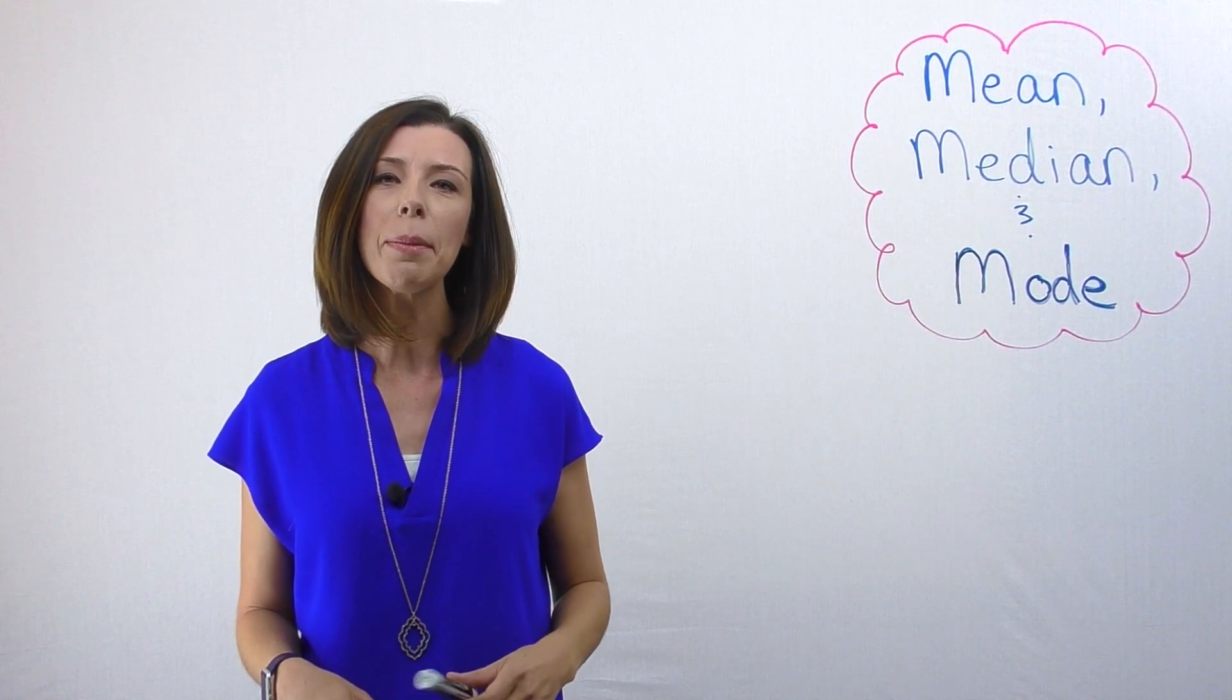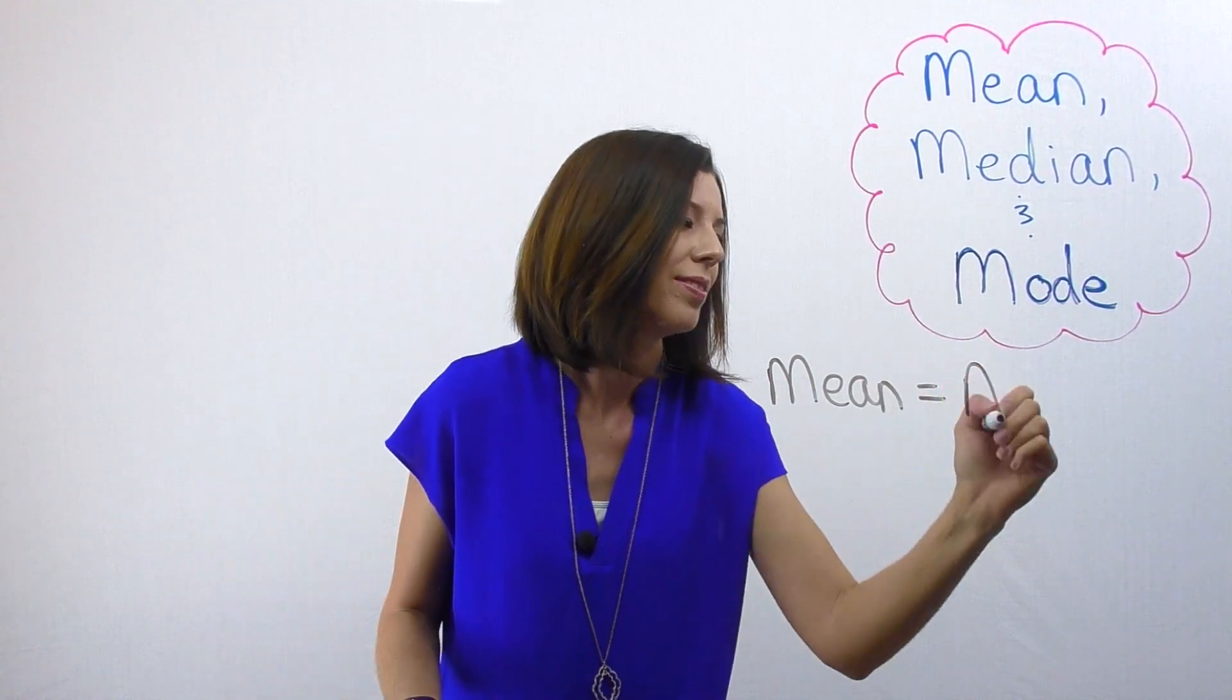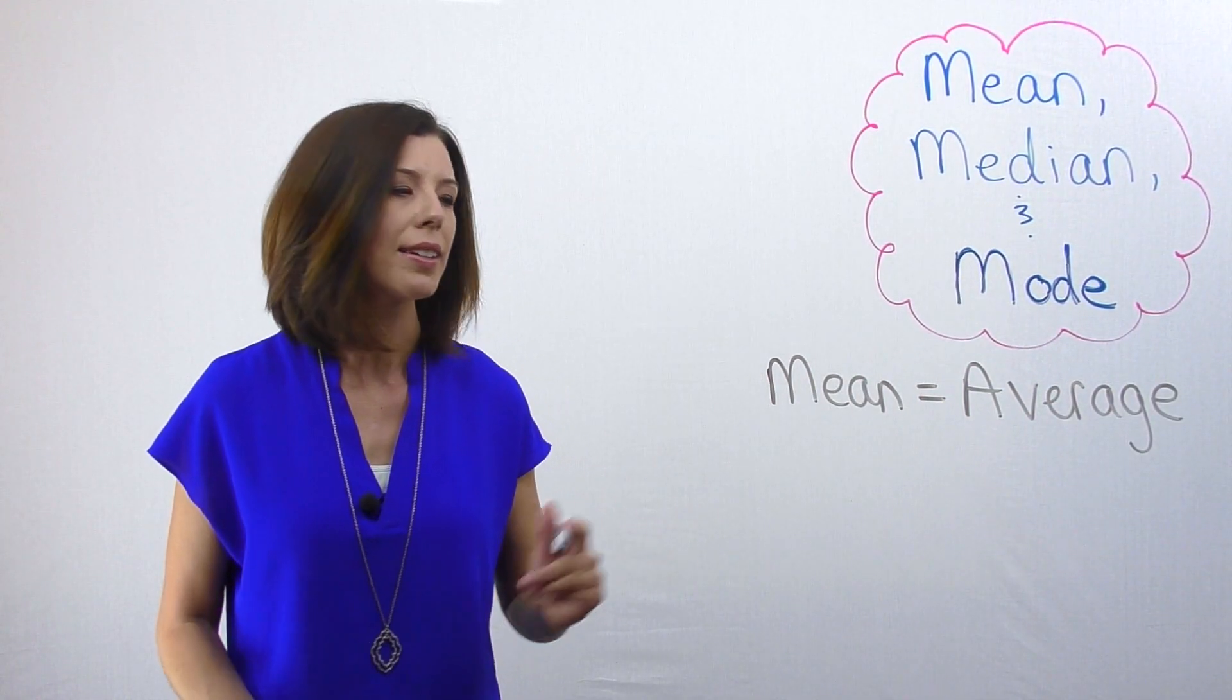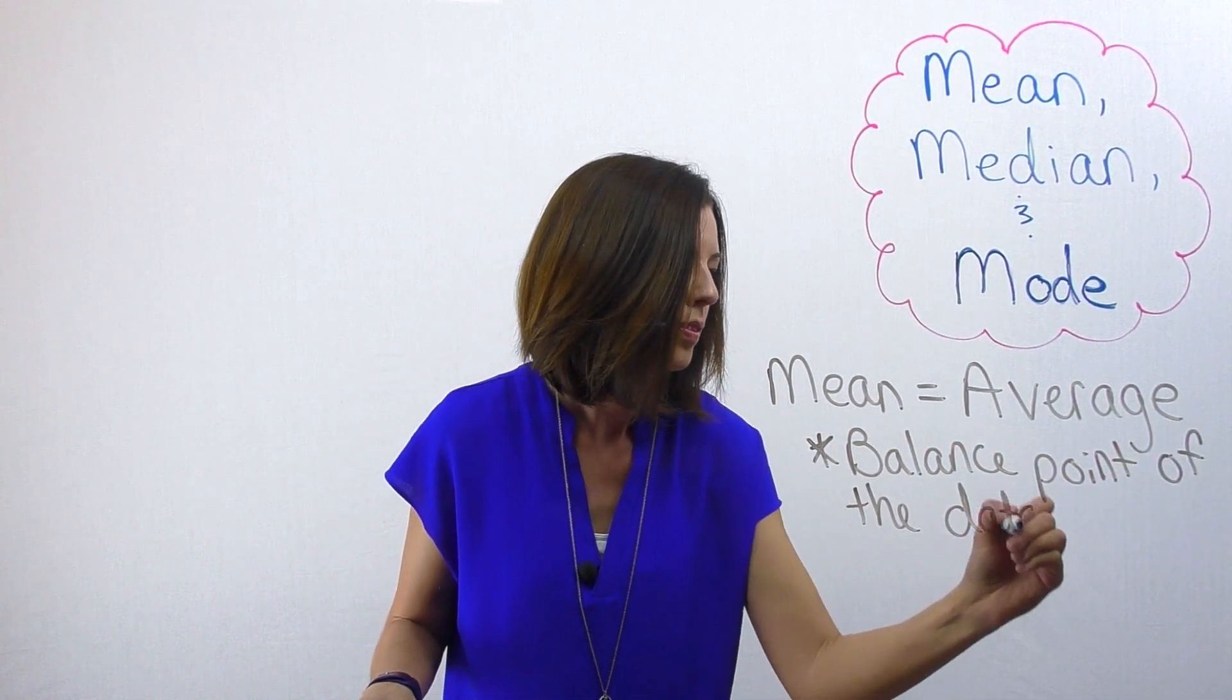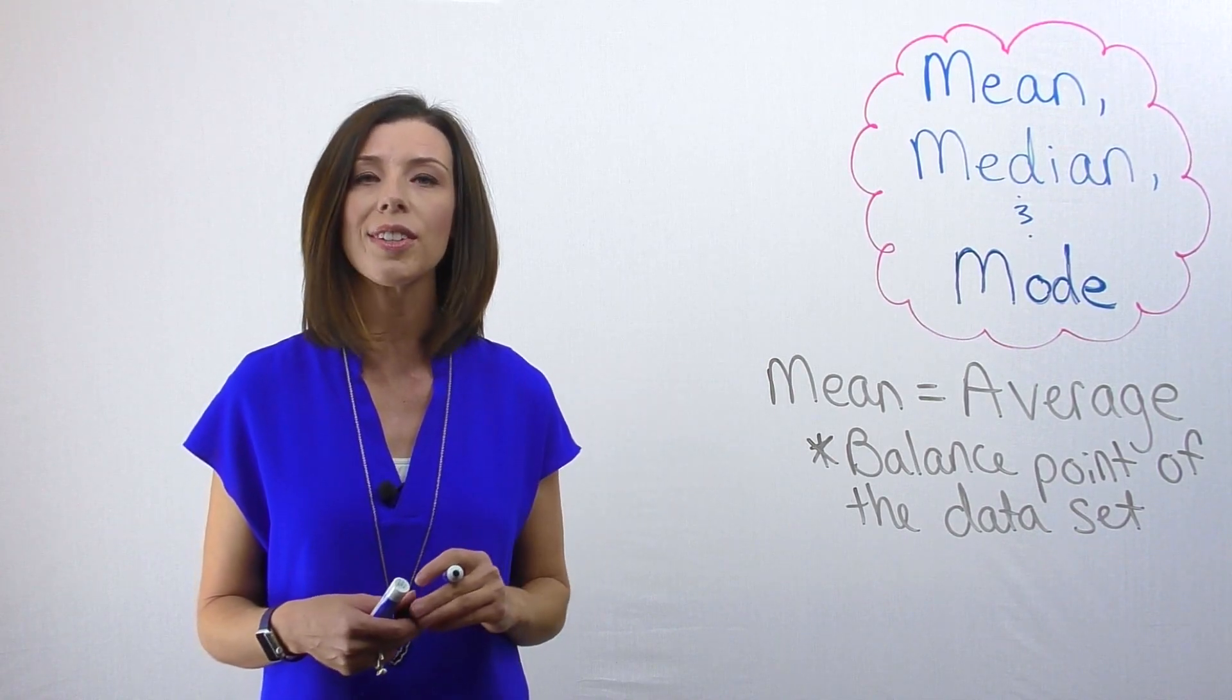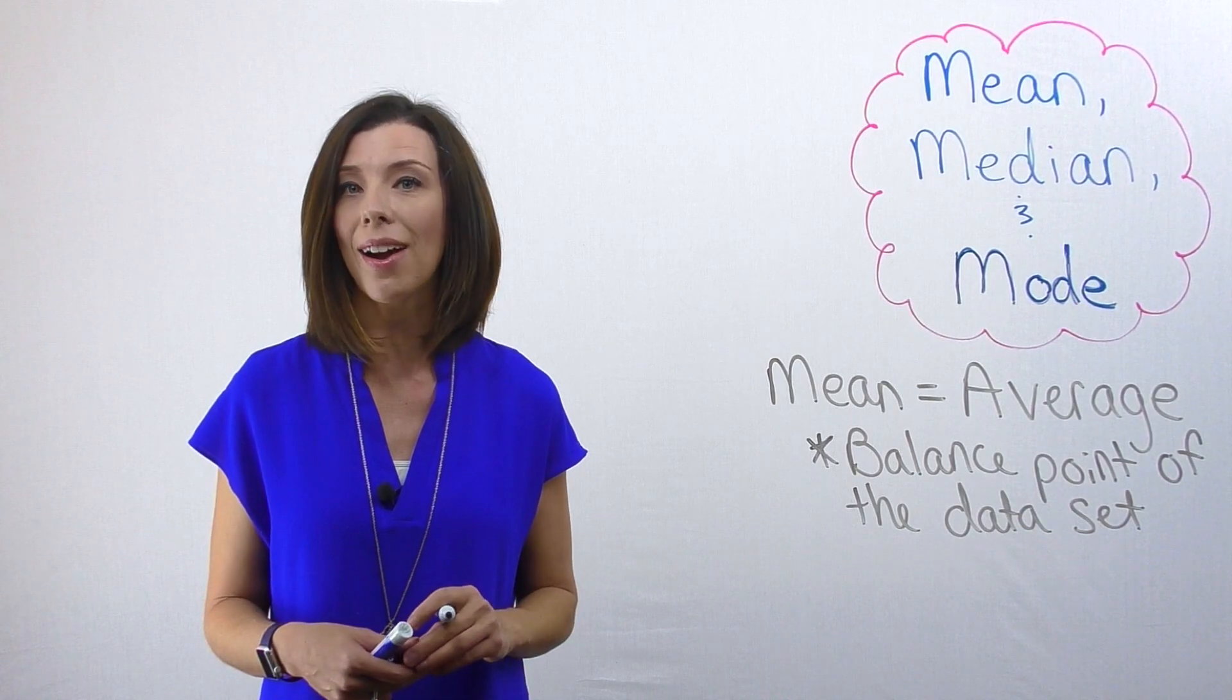Let's first start by talking about mean. When I say mean, I want you to think this is the average. The mean is the balance point of your data set. Something else you should know about the mean is that it is the most sensitive of all of our central tendencies. This is because it's really affected by outliers.